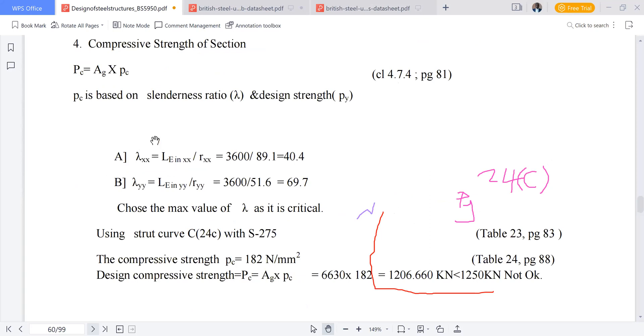Our lambda along the x-axis will be equivalent to the effective length divided by the radius of gyration along x-x, which is 40.4. Then our lambda along y is the effective length divided by radius of gyration along y-axis, which is 69.7. Now we have two values, pcx and pcy, but we want to take the lowest value, so we shall only use the highest lambda.